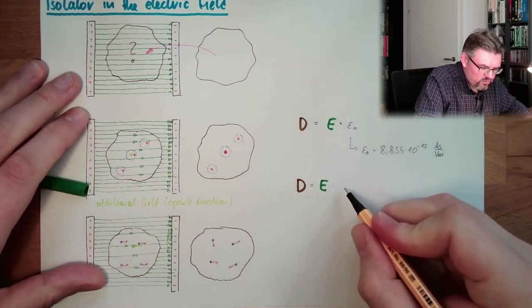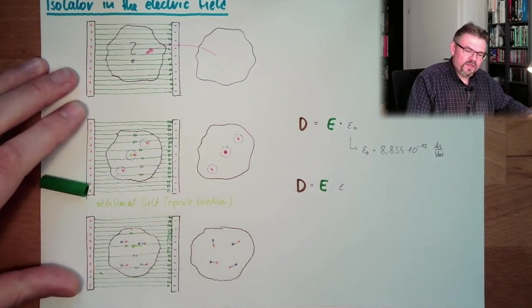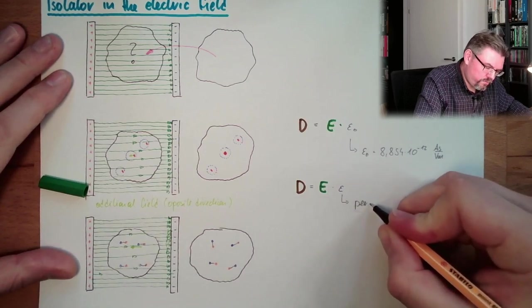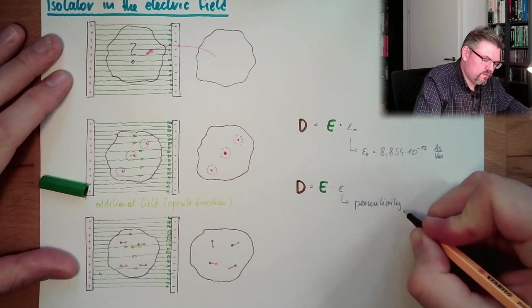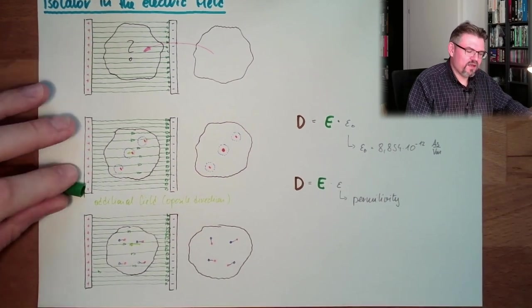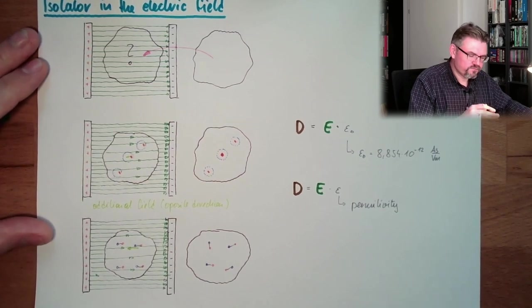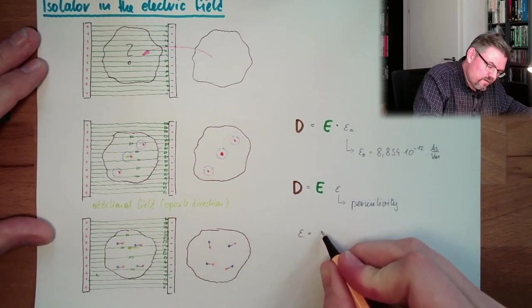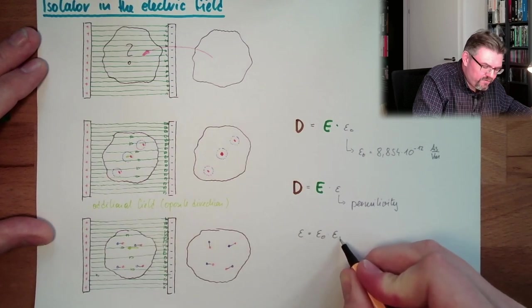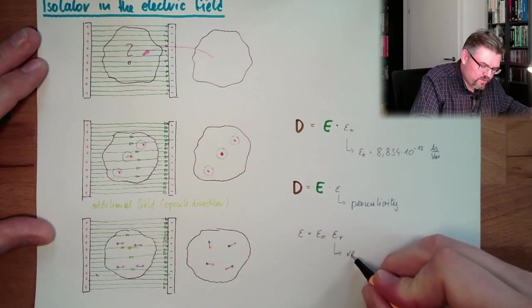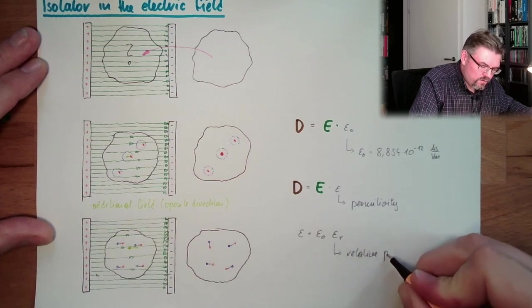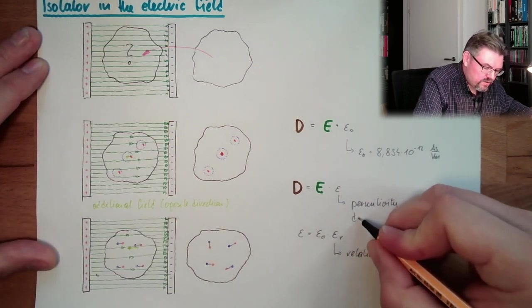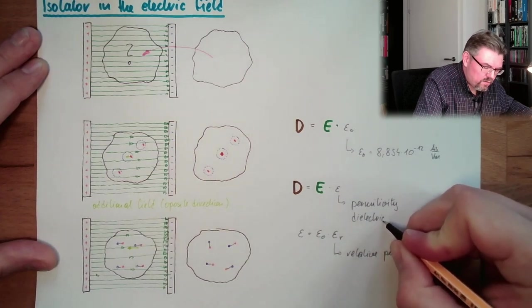And now we don't call it epsilon zero, we just call it epsilon. This is the permittivity, this is called. Permittivity or dielectric constant. Dielectric constant. We just use another constant and we're happy. And this other constant epsilon is epsilon zero multiplied by a relative epsilon r. This is the relative permittivity or this is also dielectric constant, relative dielectric constant.